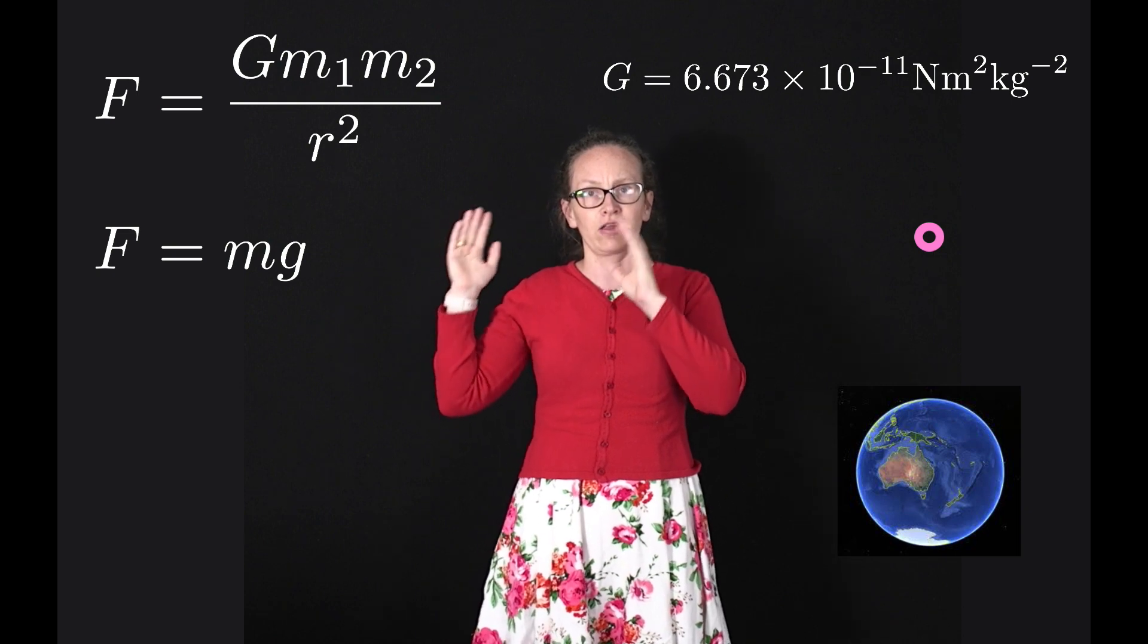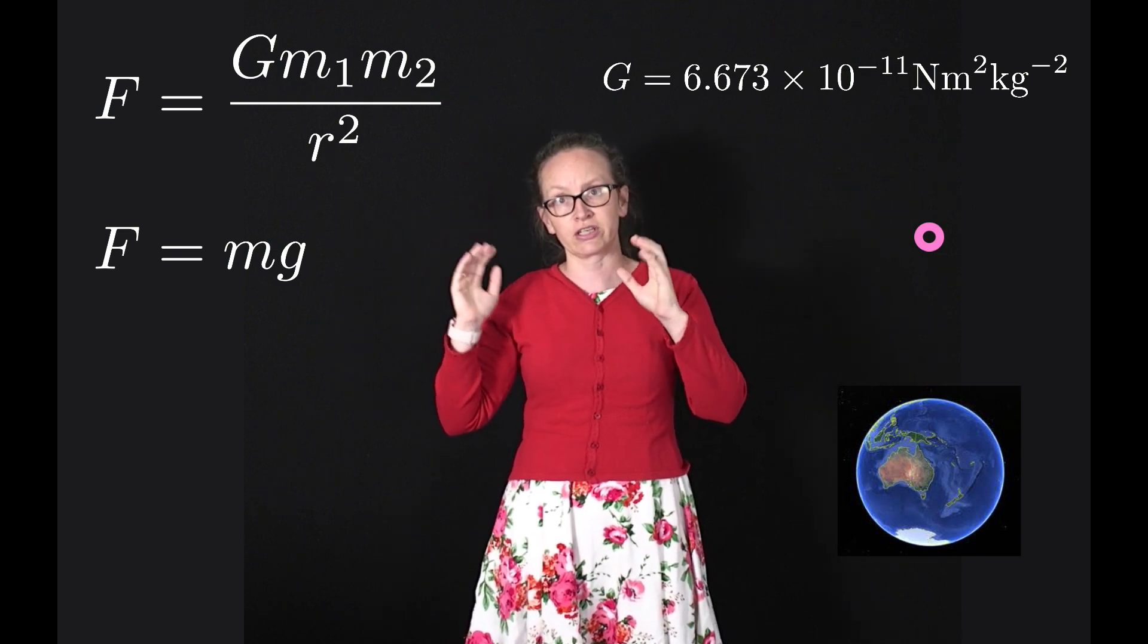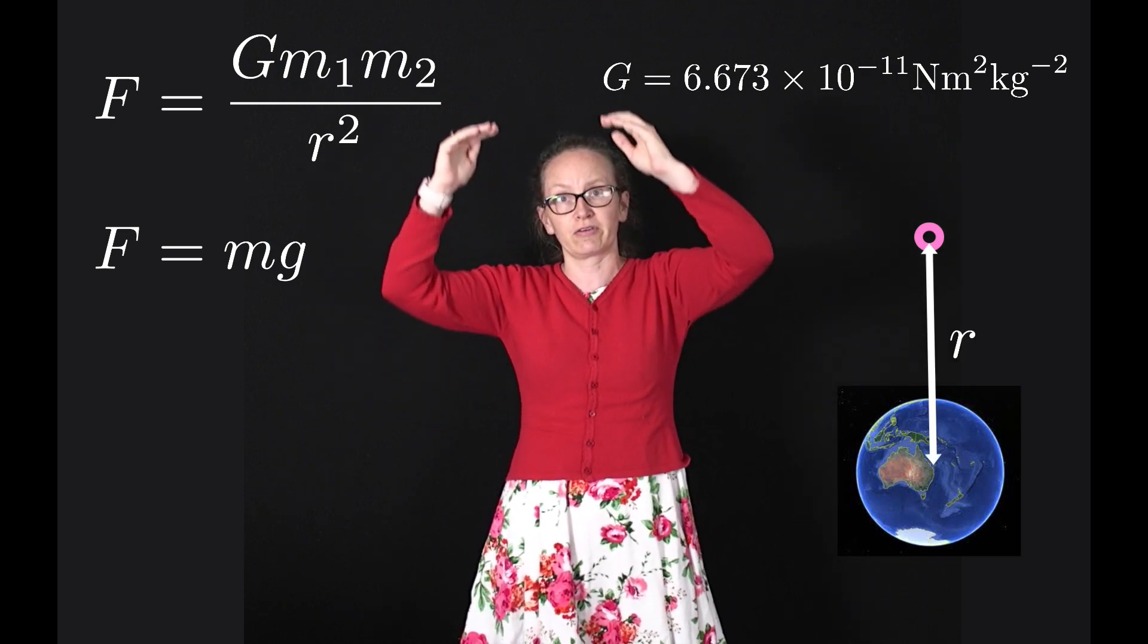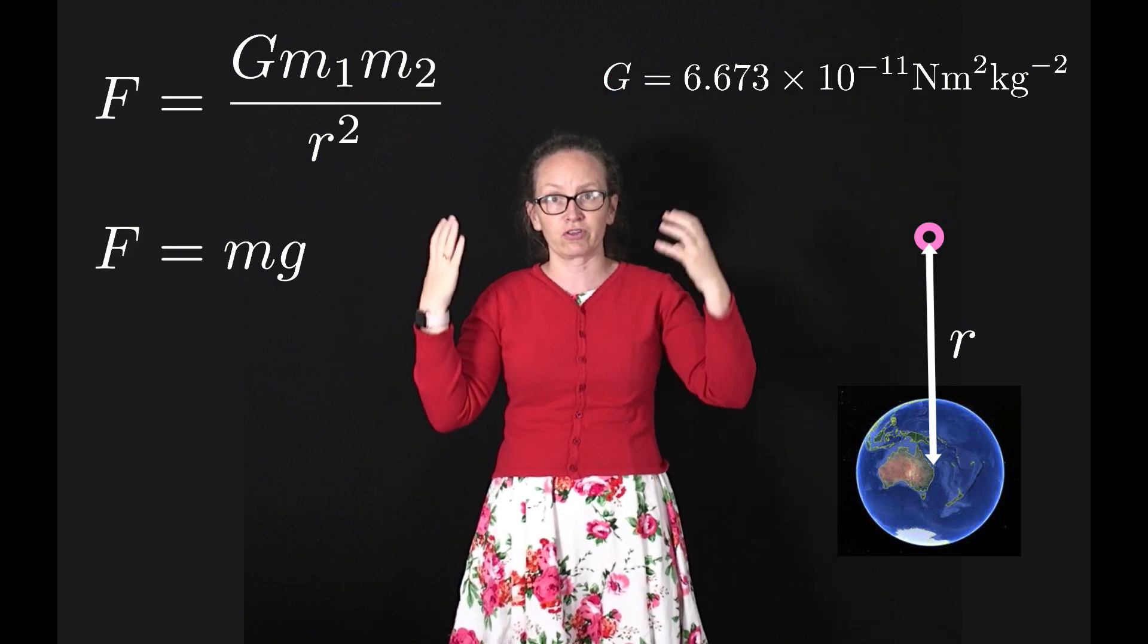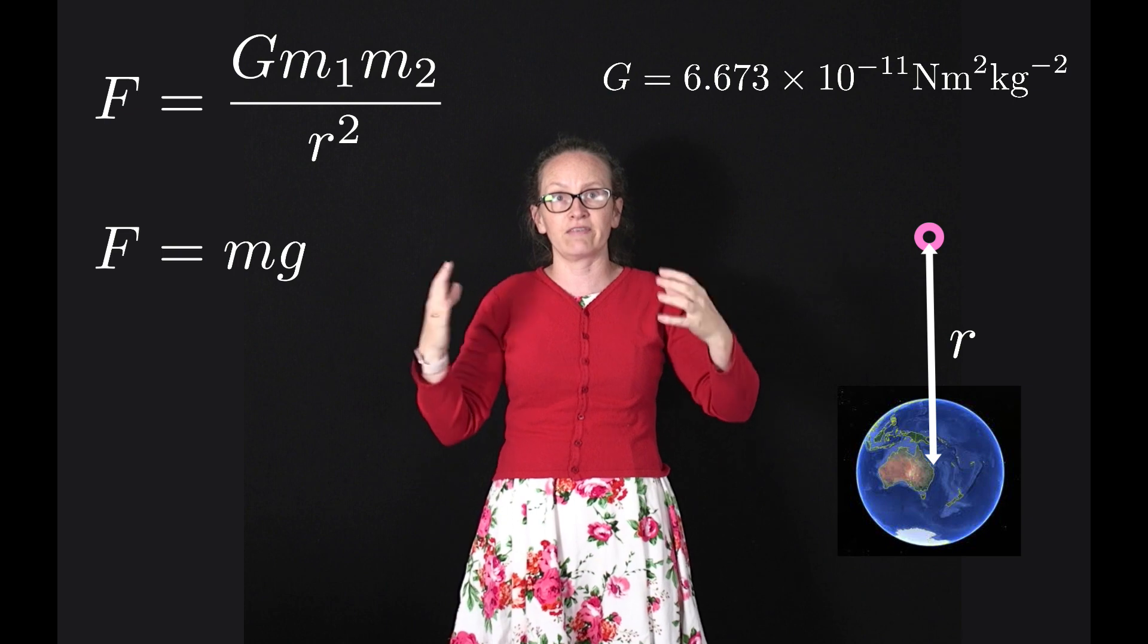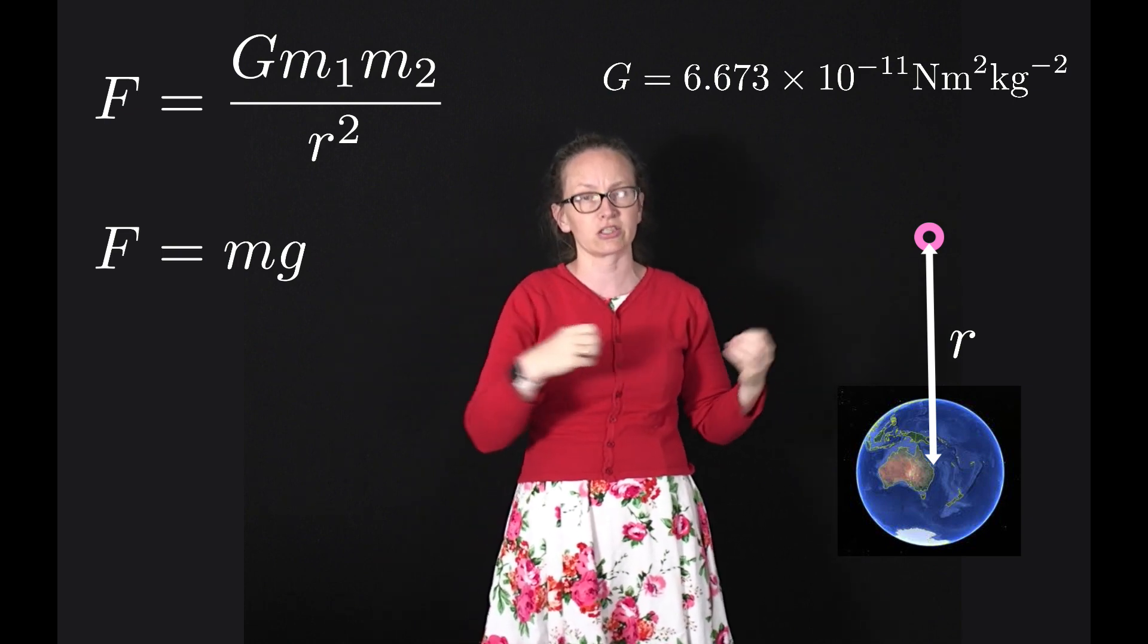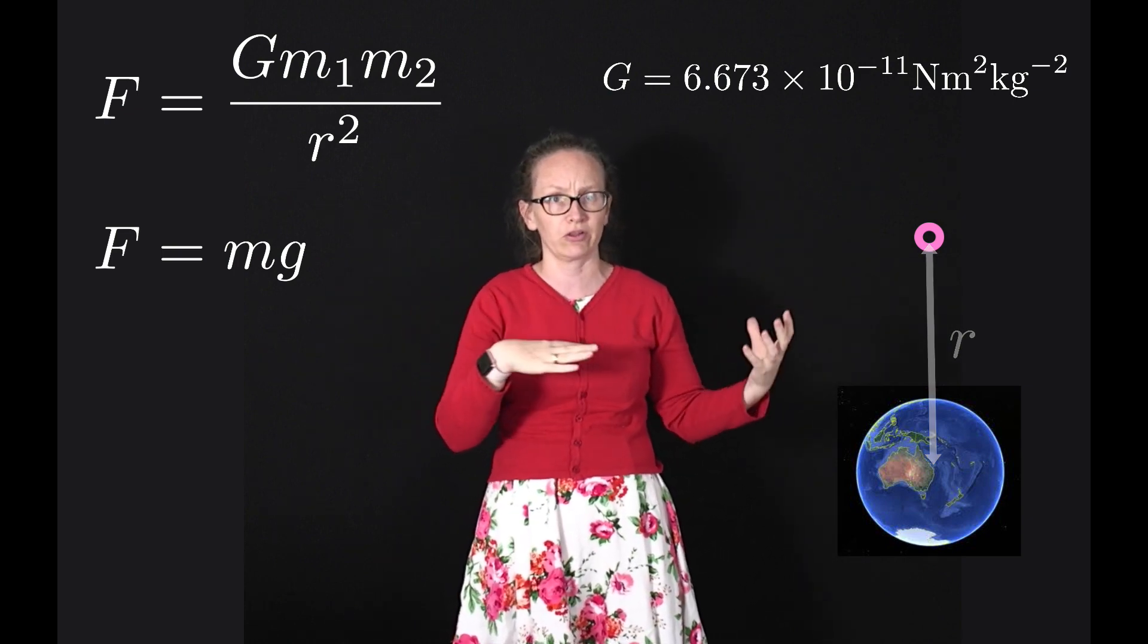If we consider our law of universal gravitation, you can see that as we get further and further away from a planet, the gravitational force decreases as the inverse square of the distance. This is known as an inverse square law.